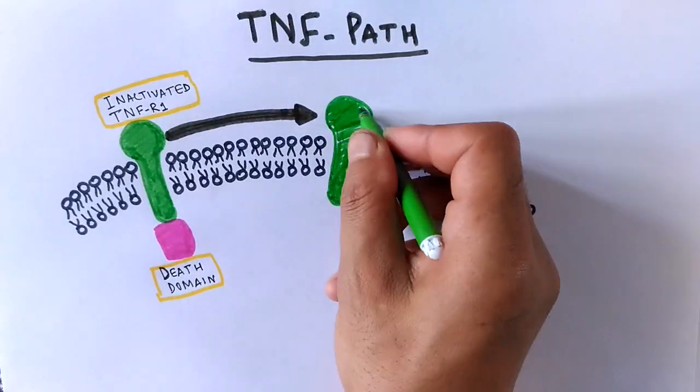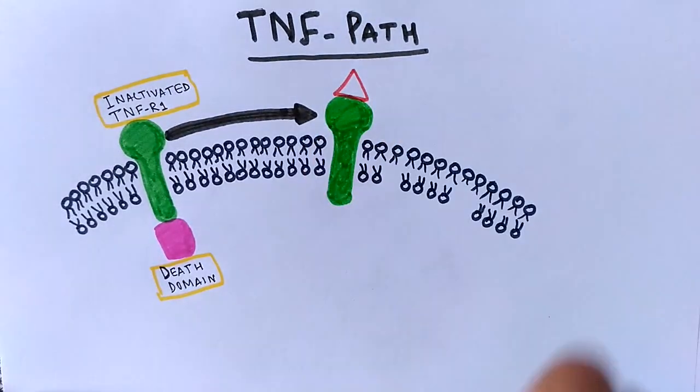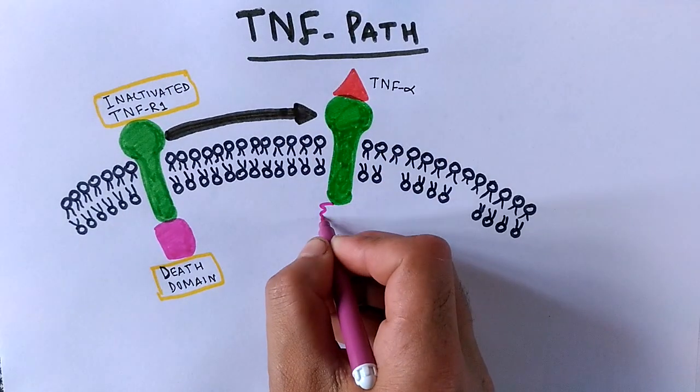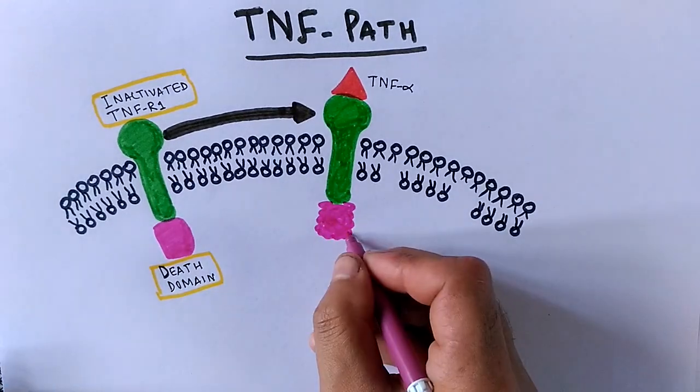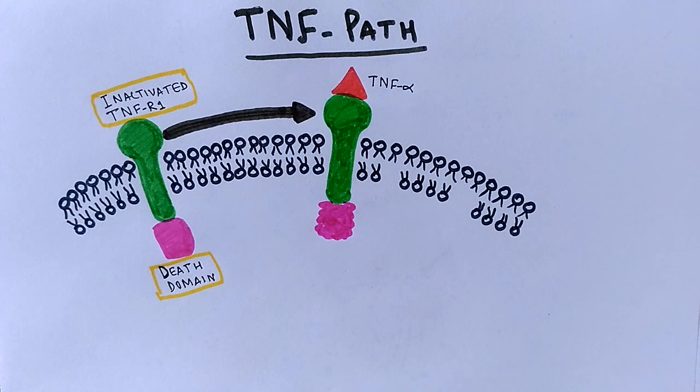When the TNF alpha molecule comes in and binds with the receptor, the binding of TNF alpha with the TNFR1 receptor causes a conformational change in the receptor, mainly in the intracellular part of the death domain.